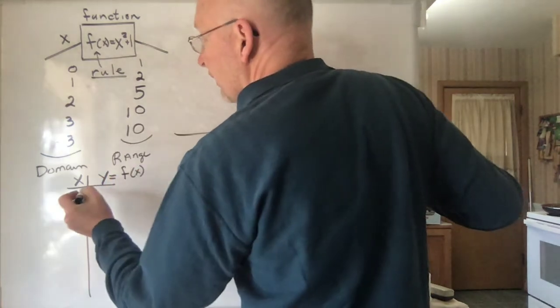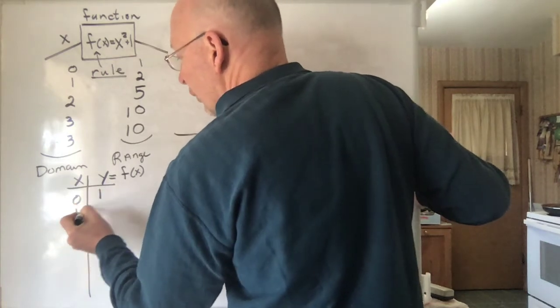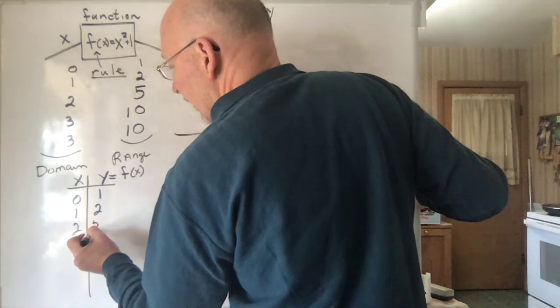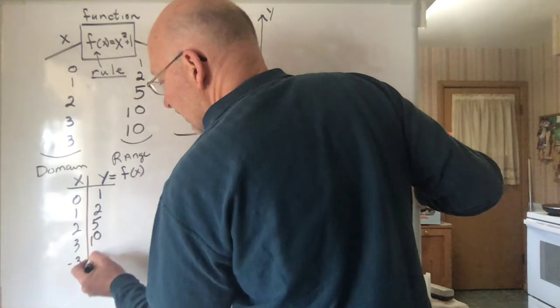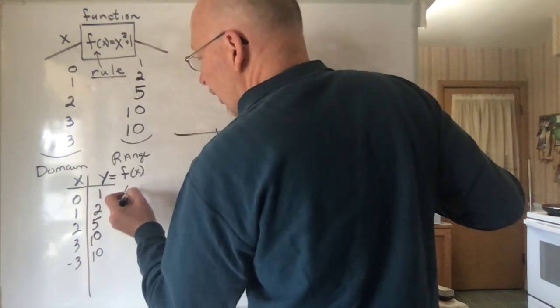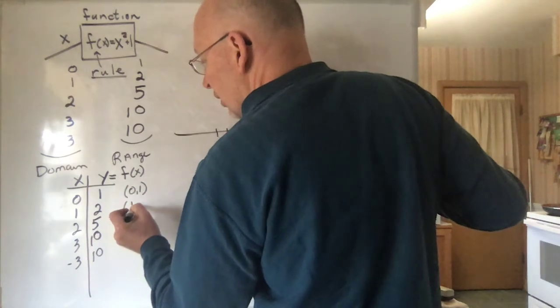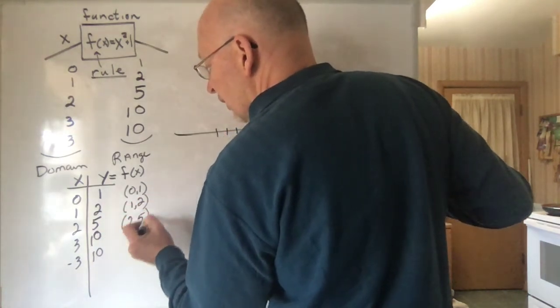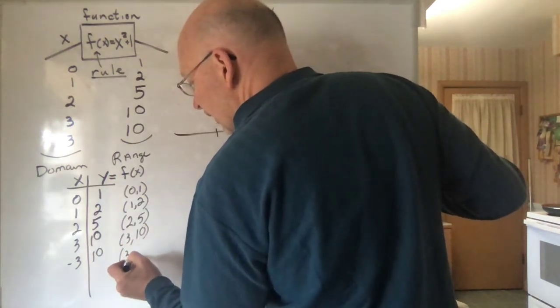So, for example, right now I've got, if I stick in a 0, we get a 1 out. If I stick in a 1, you get a 2 out. Stick in a 2, you get a 5 out. Stick in a 3, you get a 10. Stick in a negative 3, you get a 10. And so, these all give rise to ordered pairs. Here's the way you would write them as ordered pairs: (0,1), (1,2), (2,5), (3,10), and (-3,10).